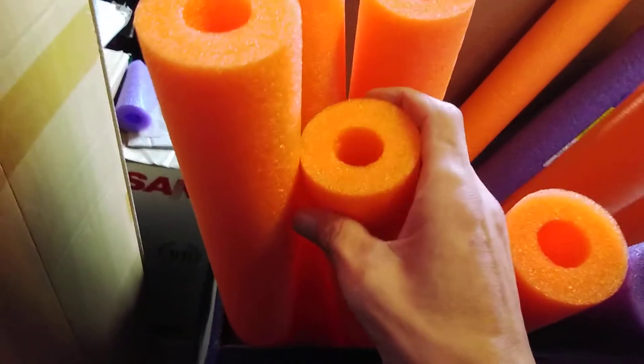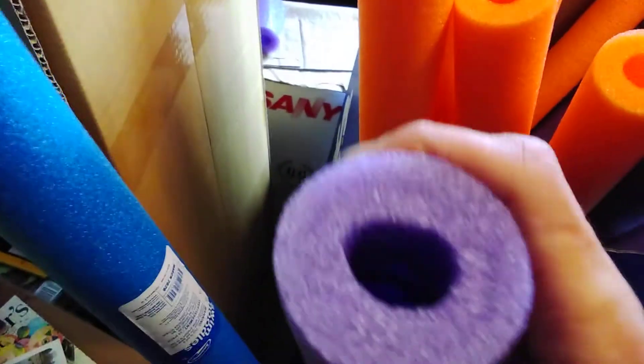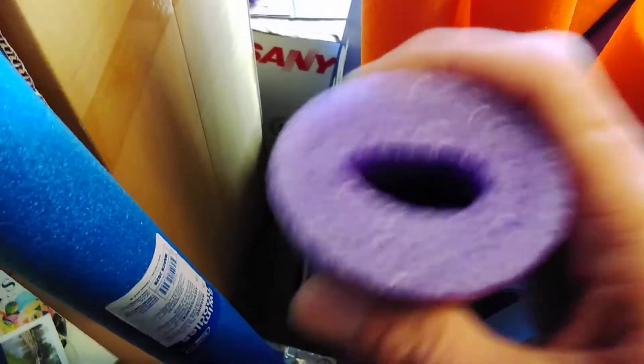Like these orange ones are alright density, but these ones are bunk. You see how easy it is to crush those? Those aren't very conducive to cutting.